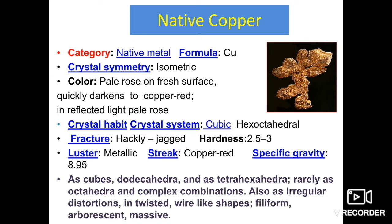Native copper occurs in cubes, dodecahedra, tetra-hexahedra, rarely octahedral, and complex combinations. They also occur as irregular, distorted, twisted wire-like shapes and filiform shapes, as well as arborescent and massive forms. These are the key factors from which you can identify native copper — twisted, irregular, distorted, or wire-like shapes.